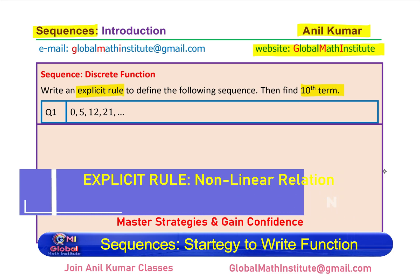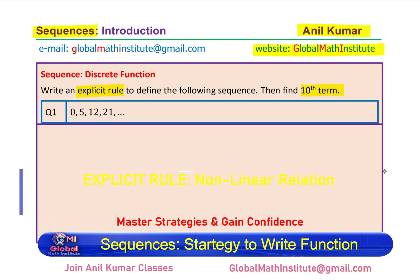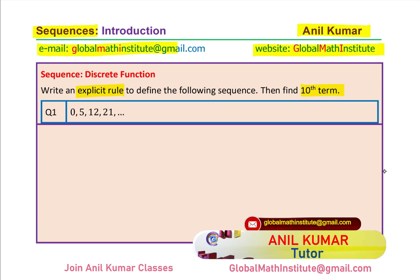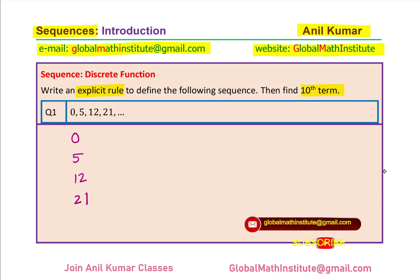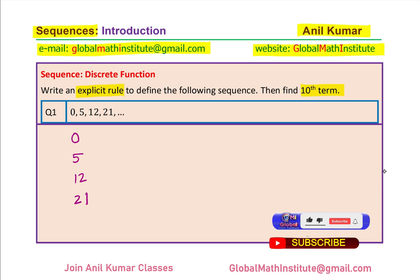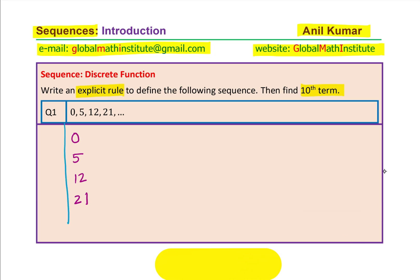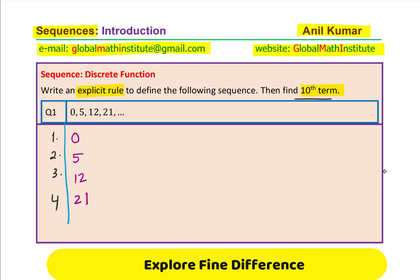I would like you to pause the video, answer the question, and then look into my suggestions. Now let's look into the sequence given to us: 0, 5, 12, 21, and so on. In any sequence we call these the term values. On the left side I am writing the term numbers — term number one, two, three, and four. We also need to find the value of the tenth term. To find the explicit rule, one of the best ways is to find the finite difference.